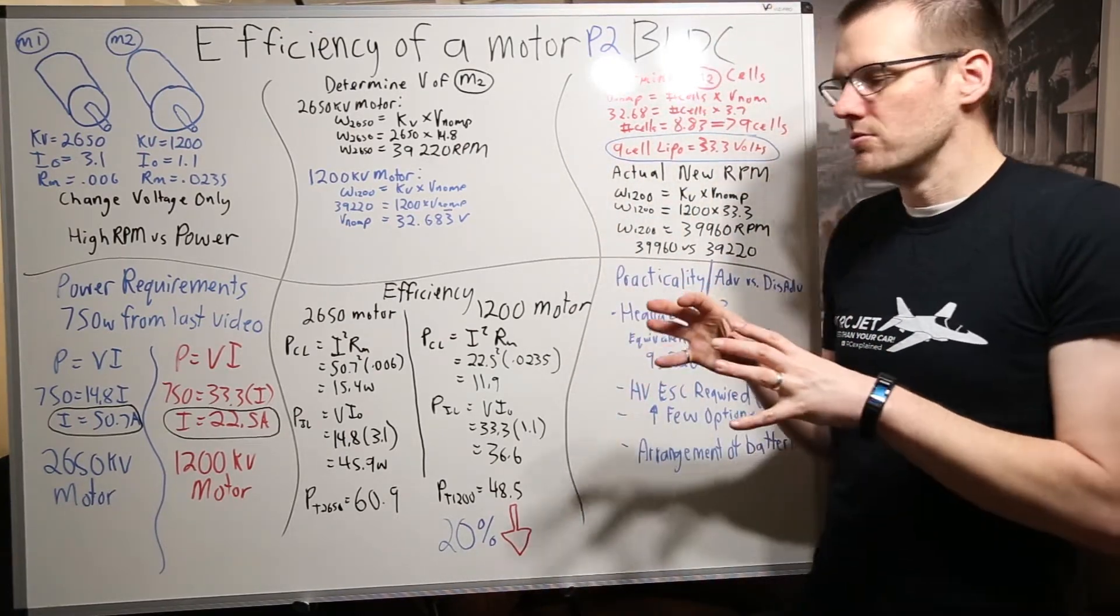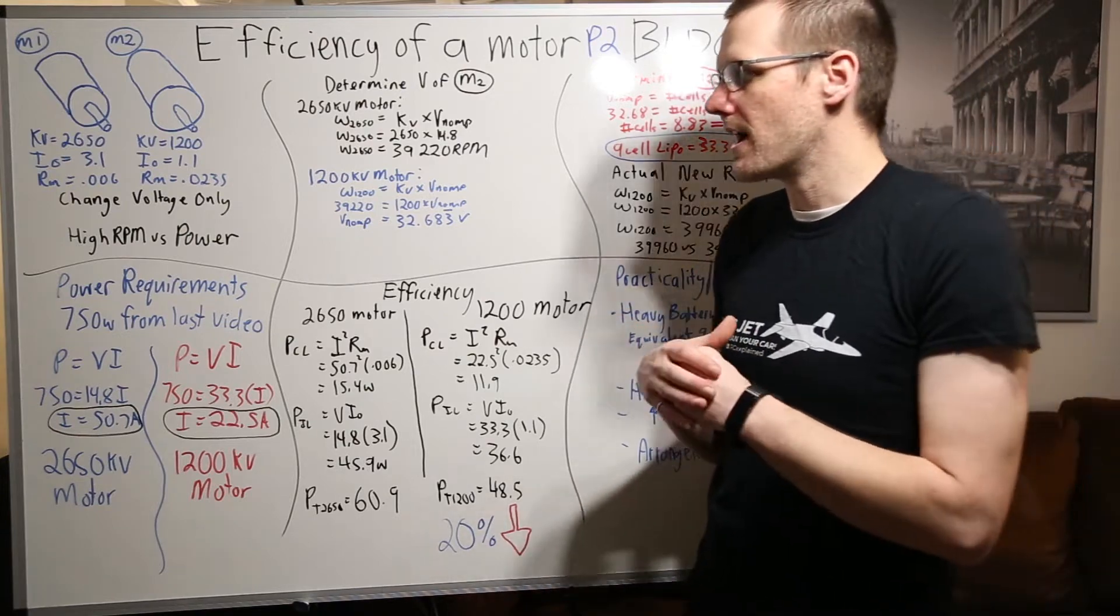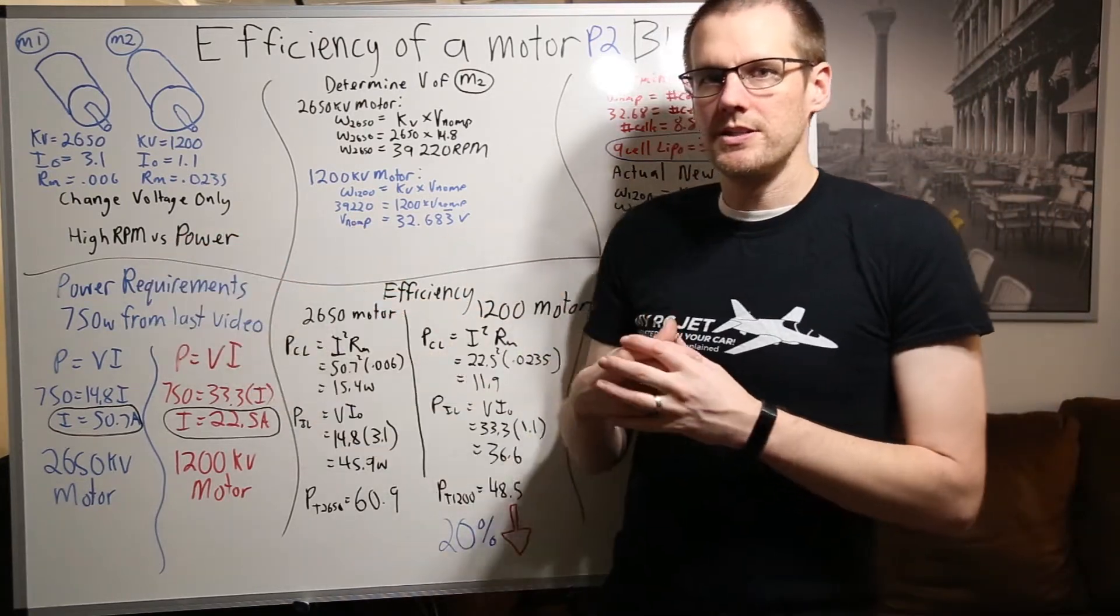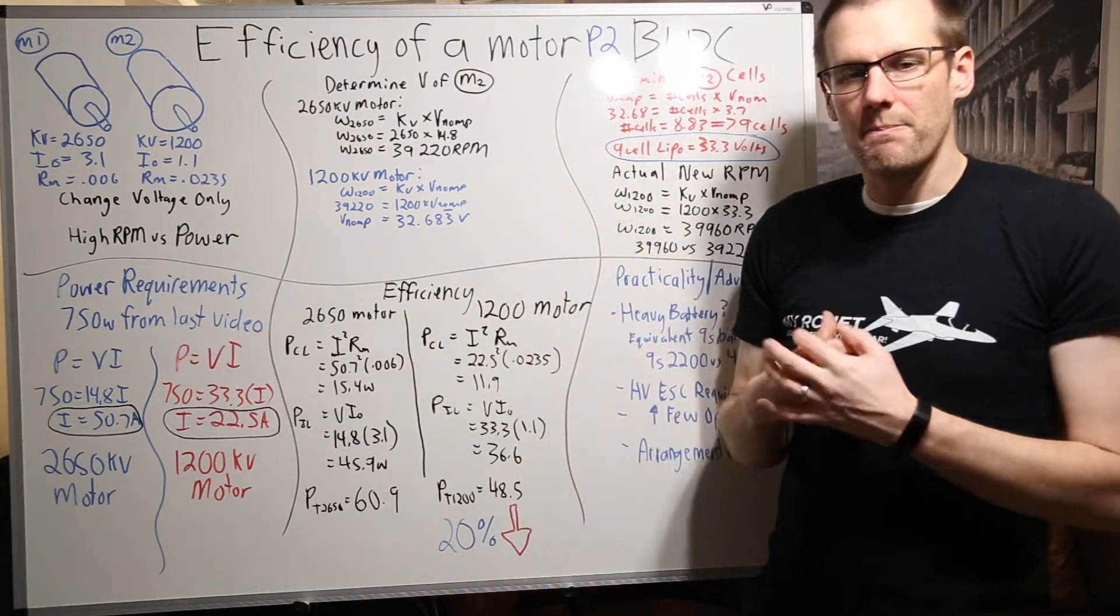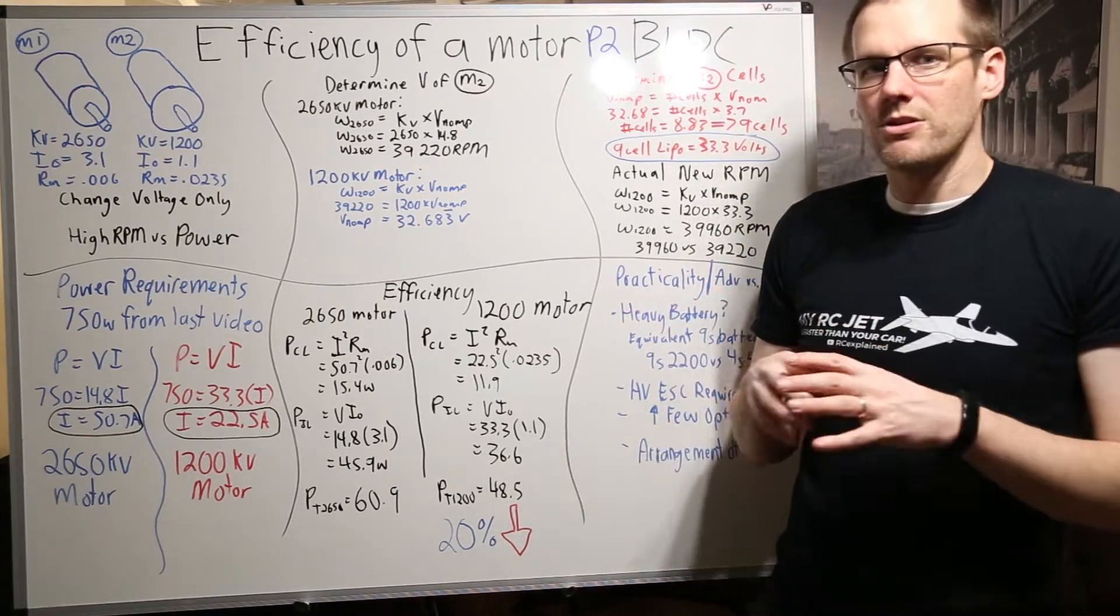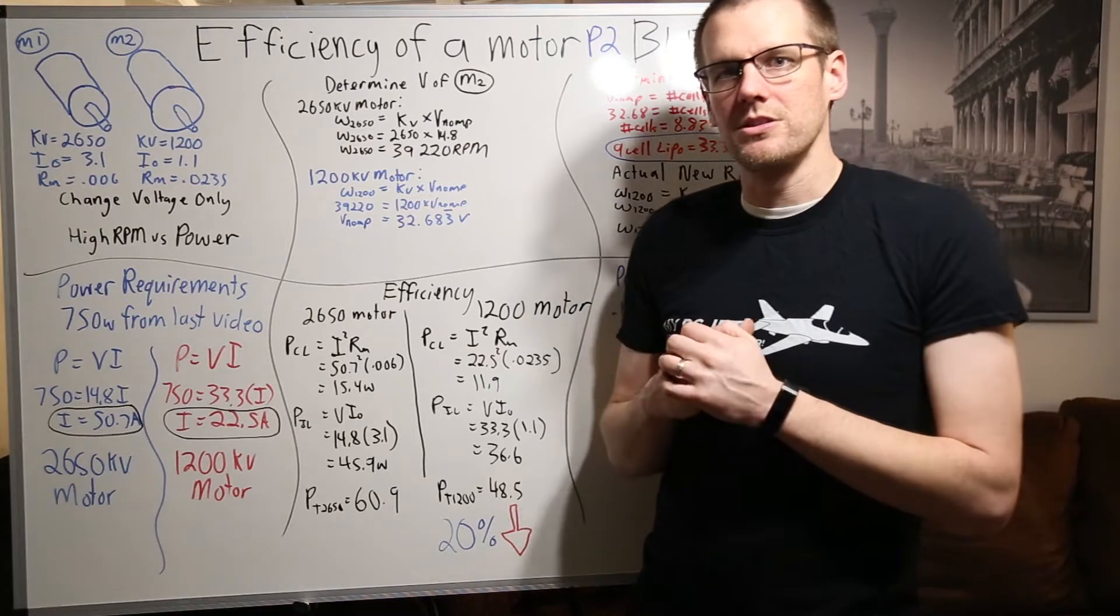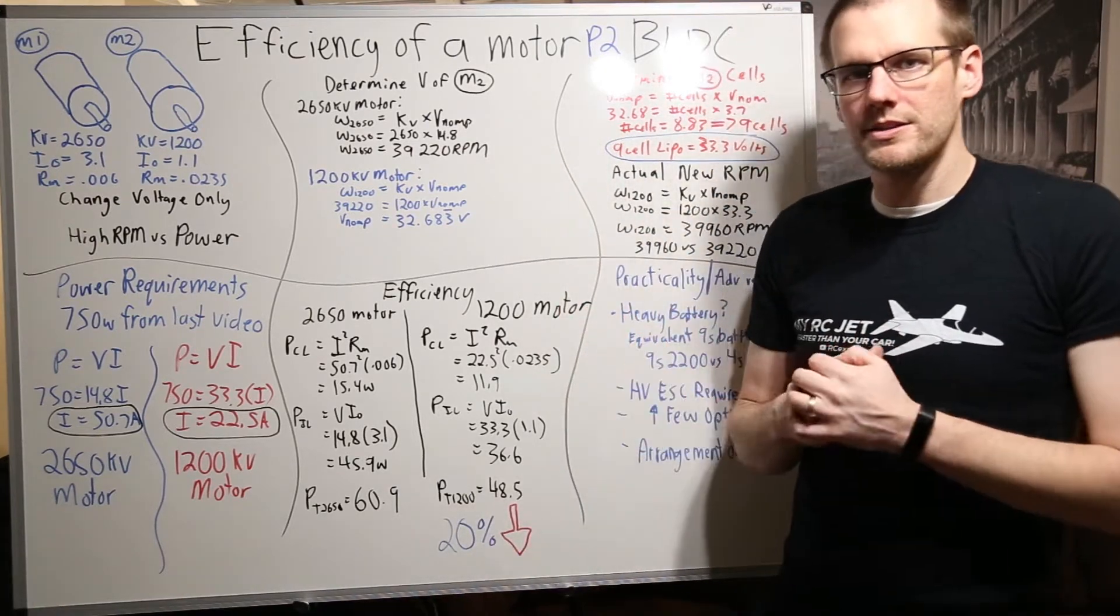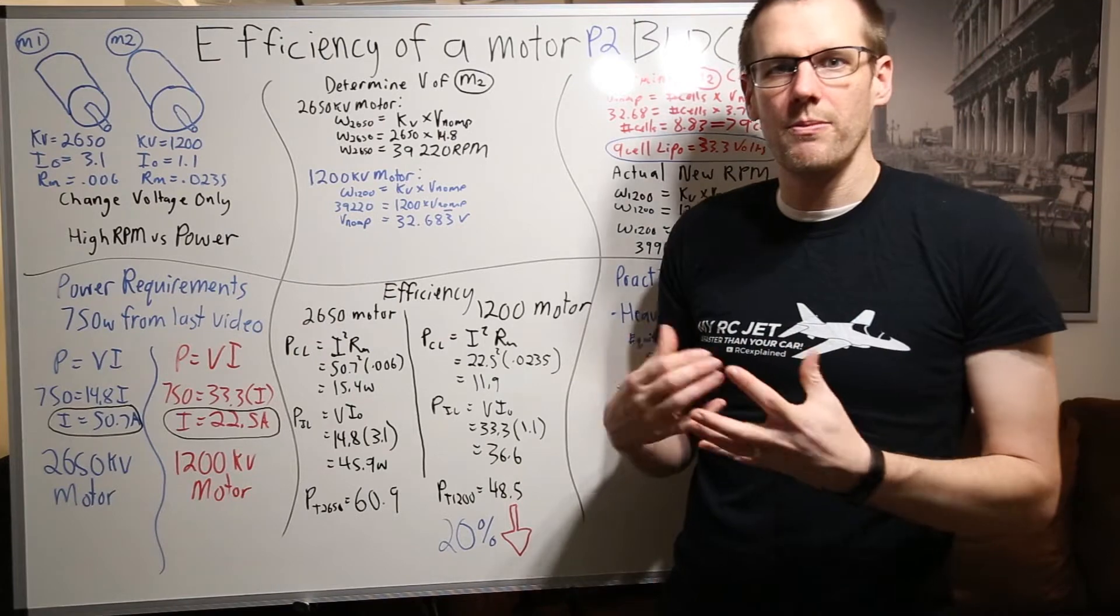Now one thing before we get too deep into this, I did want to mention that high RPM, it's much easier to extract the power out of those RPMs than lower RPMs. Now the perfect example of where you can actually see this is with sport bikes. Sport bikes are able to produce a lot of RPM.